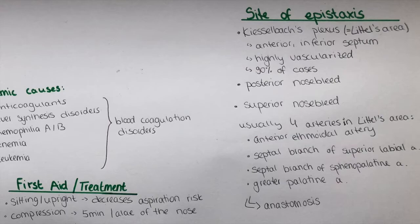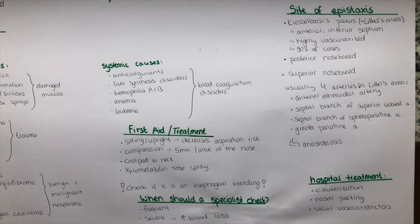There are usually four arteries which build Little's area: the anterior ethmoidal artery, the septal branch of the superior labial artery, the septal branch of the sphenopalatine artery, and the greater palatine artery. All those anastomose there, which is why there can be excessive blood if one of these arteries ruptures. There can also be a posterior or superior nosebleed in different areas of the nose.